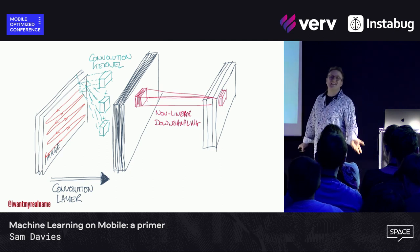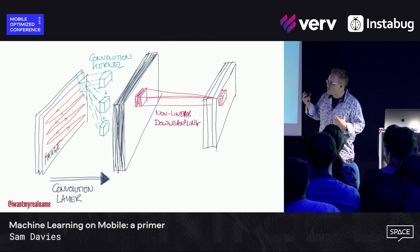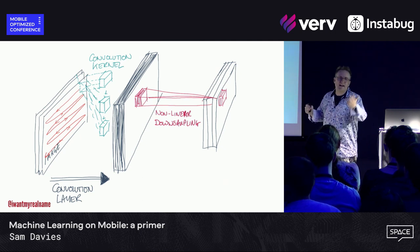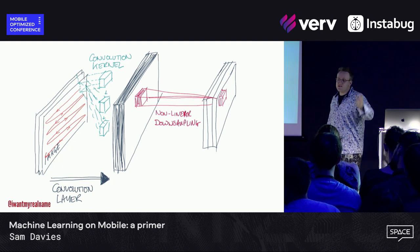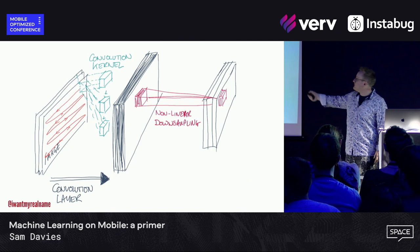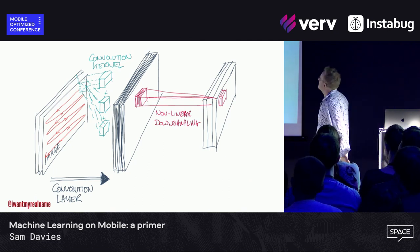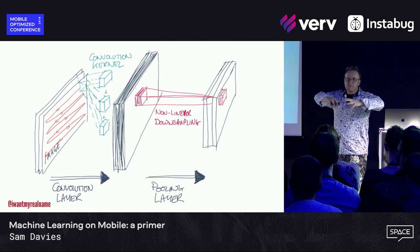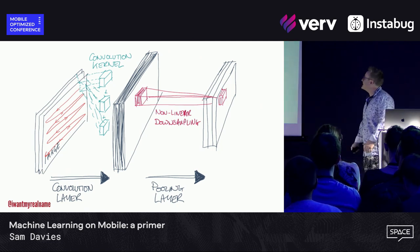Then you do some non-linear downsampling — why? Because that's really cheap. Non-linear downsampling means you're not going to do nice visual downsampling: you're going to take the maximum, or the minimum, or just take the top-left square — something really simple. You do that so you end up with less data. This is called a pooling layer. Because your convolution layer massively expands the amount of data you've got, you then drop it down again with a pooling layer using non-linear downsampling.